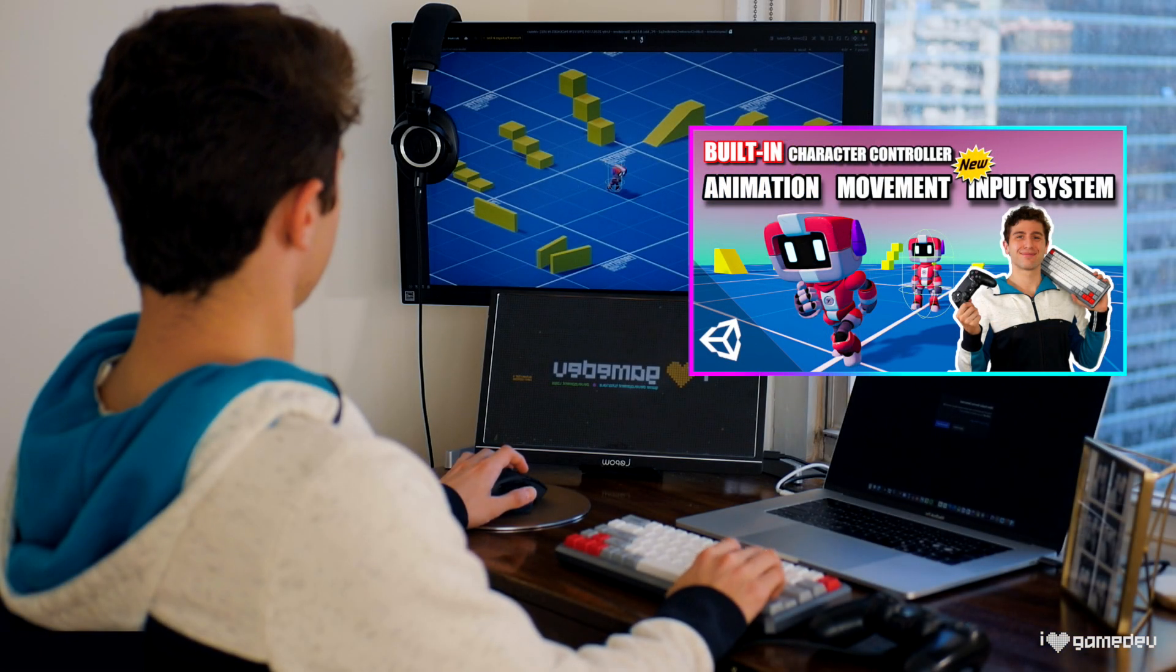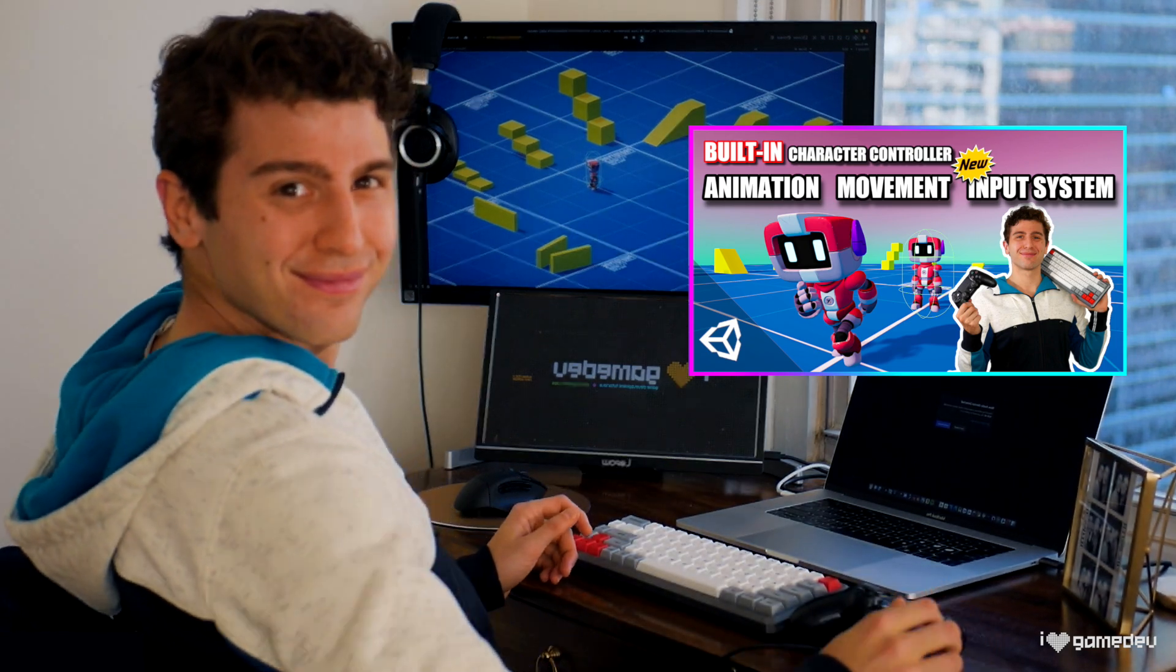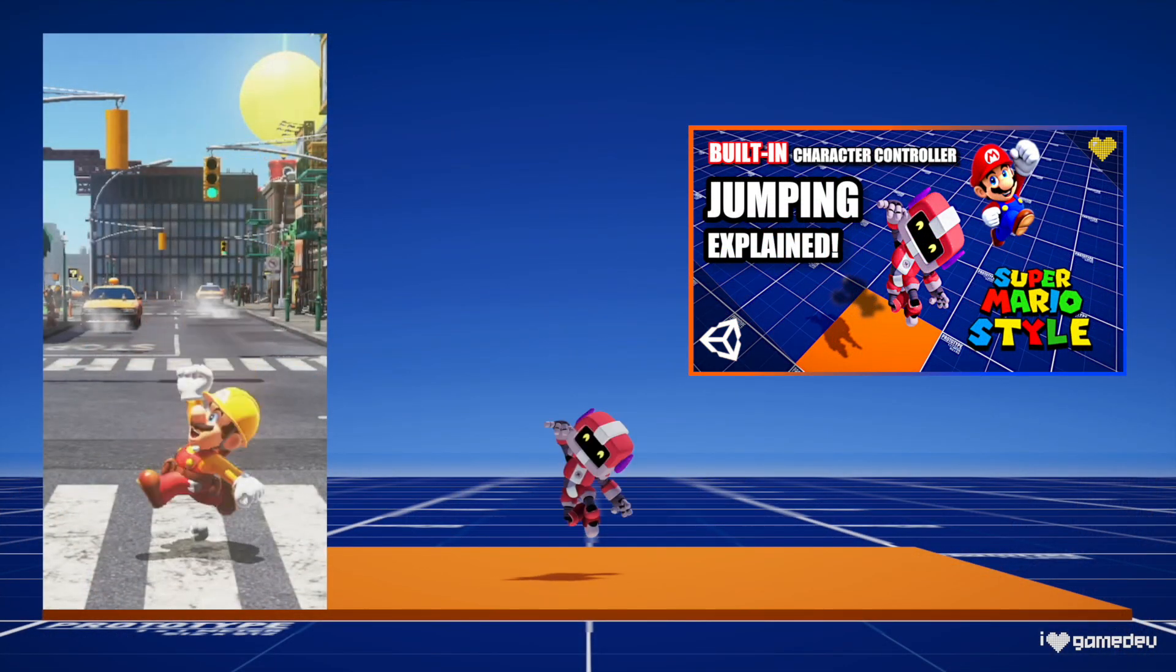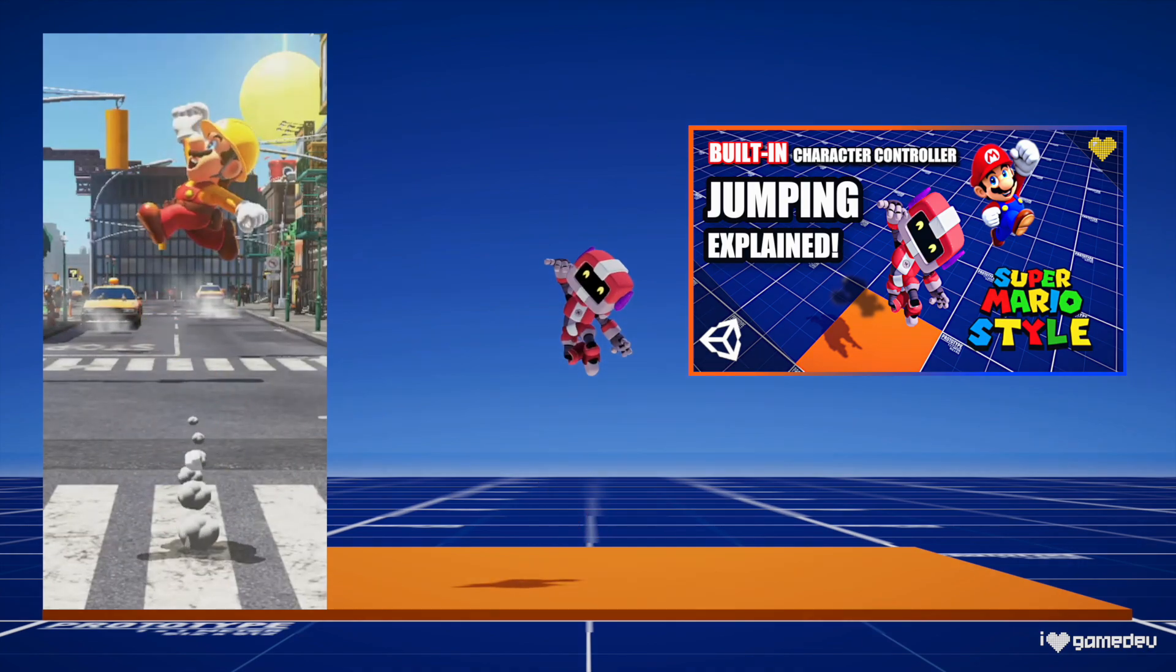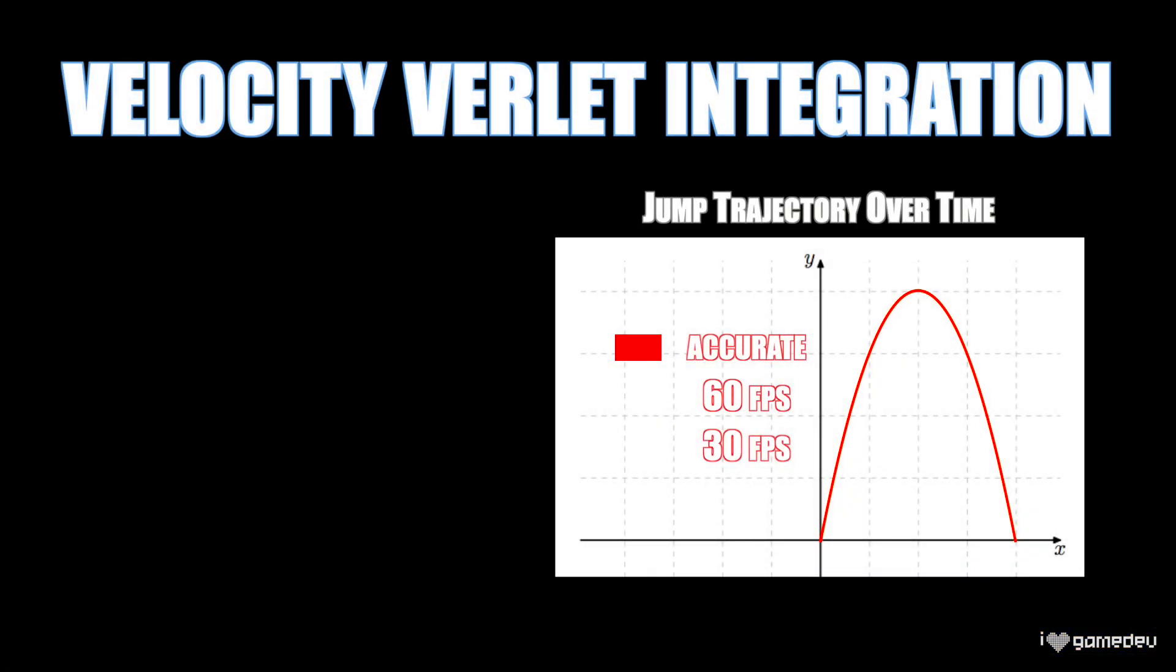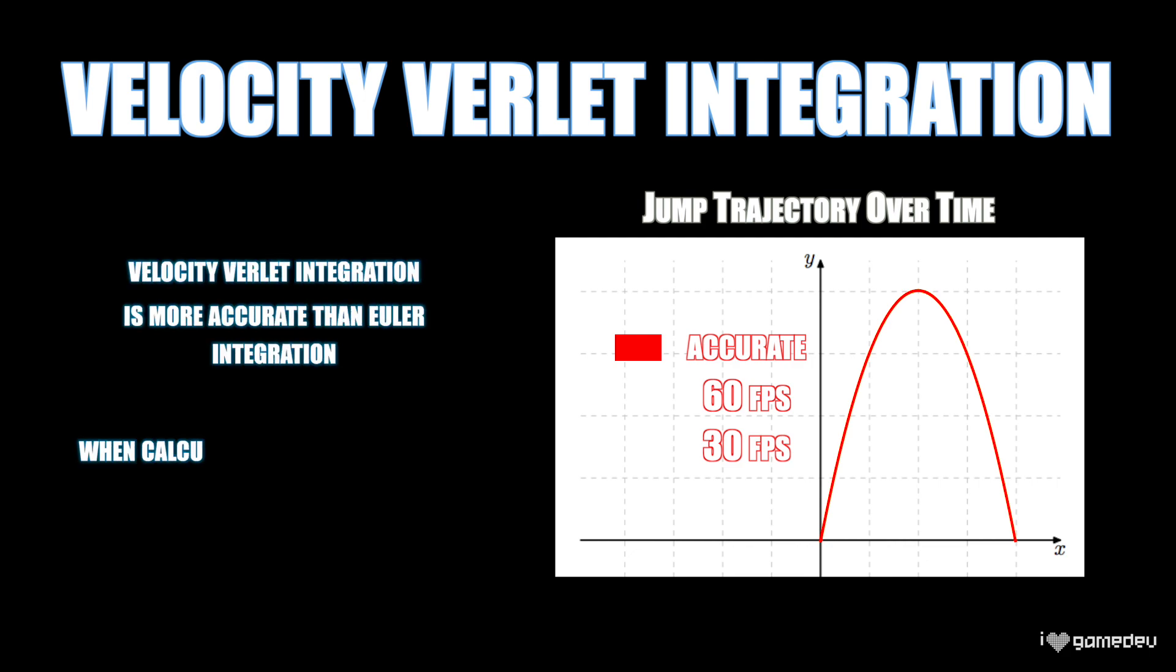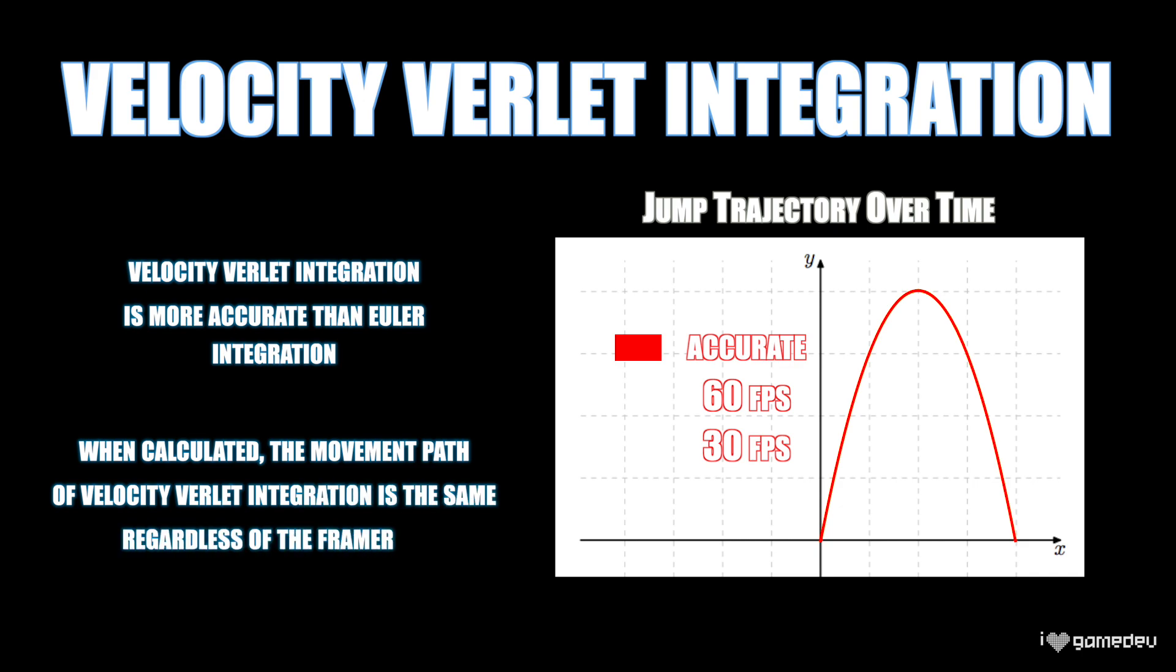Be sure to check out the previous videos in this series to get a full understanding up to this point. But to summarize our reasoning, Velocity Verlet integration is more accurate than Euler integration because our jump would not be impacted by the frame rate of our game.